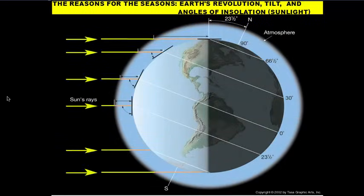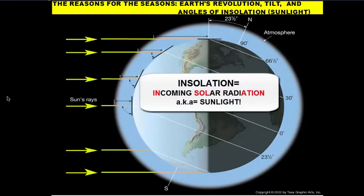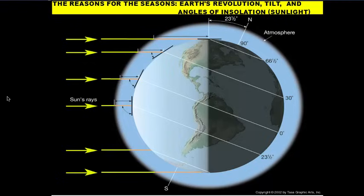Looking at this diagram, the two main reasons for the seasons are Earth's revolution around the Sun and the tilt of the Earth on its axis. As a result, they affect what we call angles of insolation — essentially the angles at which sunlight hits. Insolation is short for incoming solar radiation. The Earth is tilted on its axis at 23 and a half degrees, so it doesn't sit straight up and down. This tilt is going to play a big role.